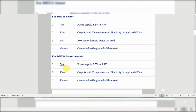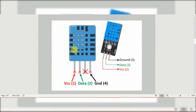In the DHT11 module we have the same pins: VCC, data, and ground. The first pin is used for power supply, the second is for data, and the third pin is for ground. You can see in this diagram — this one is your DHT11 sensor and this one is your DHT11 module. In the DHT11 sensor we have four pins: VCC, data, NC, and ground. In the DHT11 module we have three pins: ground, data, and VCC. The NC pin in the sensor has no use.